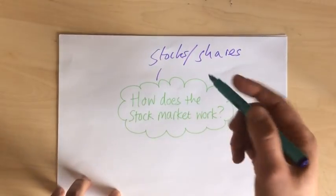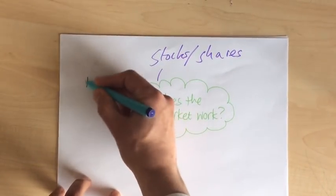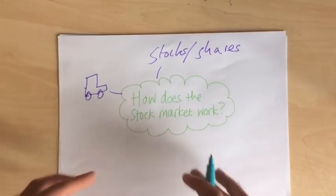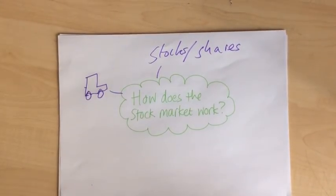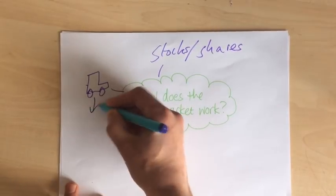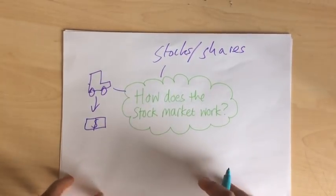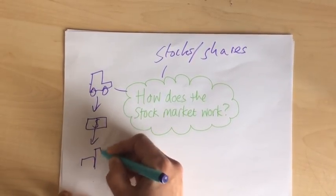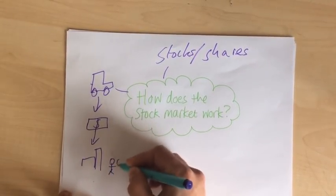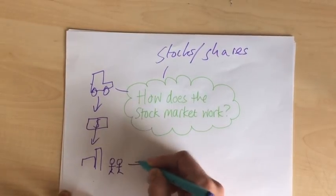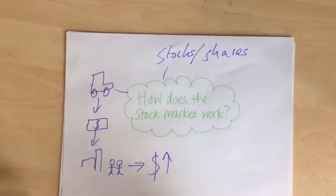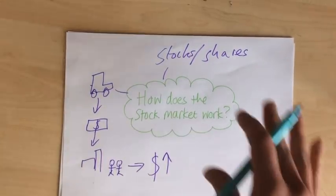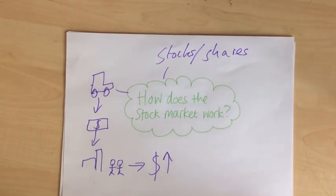So what happens is someone buys their share in Ford — there's a car that symbolises Ford. And they hope that that company does well. The company uses that money to invest in things like new factories, new buildings, or more workers, so they would hopefully make more profit. When the company makes more profit, the value of the shares that you have bought will go up.